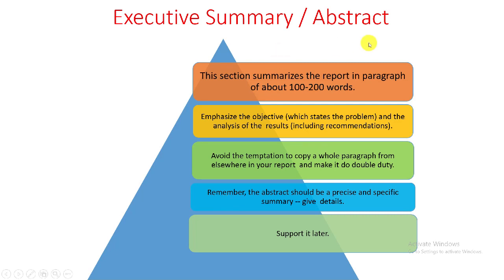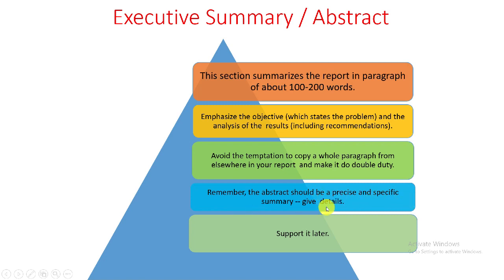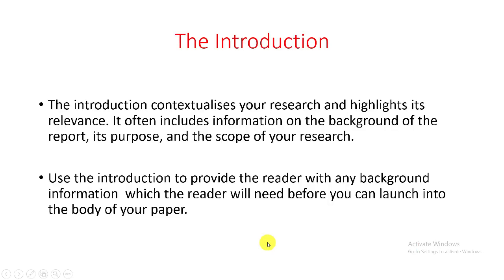In the summary section, this section summarizes the report in a paragraph of about 100 to 200 words. Emphasize the objective and the analysis of the results. Avoid the temptation to copy a whole paragraph from elsewhere in your report. Copy-paste content can be easily checked and discovered. Remember, the abstract should be a precise and specific summary — there is no need to give details that will be supported later.